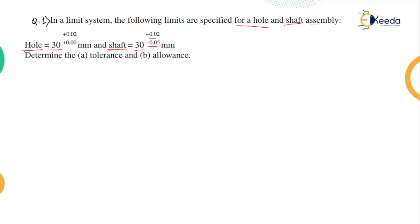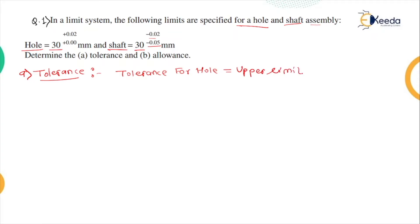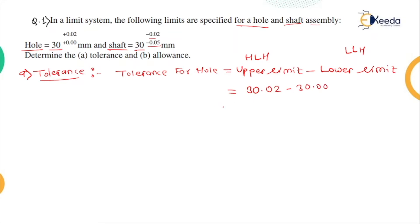First we will find out the tolerance for the hole. Tolerance equals upper limit minus lower limit, also called higher limit of hole minus lower limit of hole. So tolerance equals 30.02 minus 30.00, which gives us 0.02 mm.